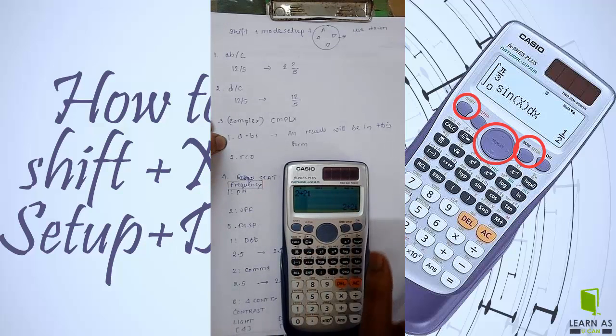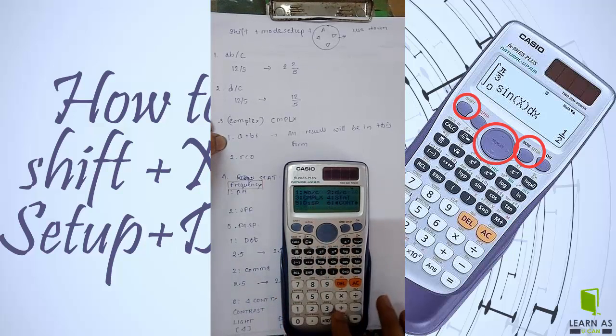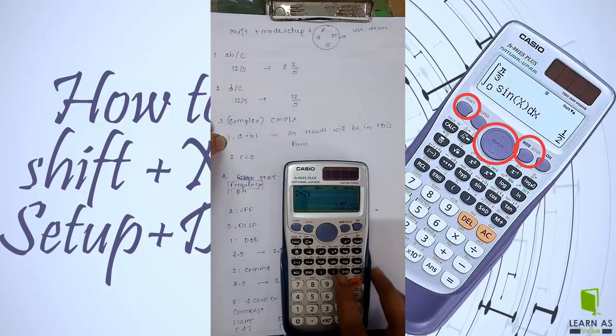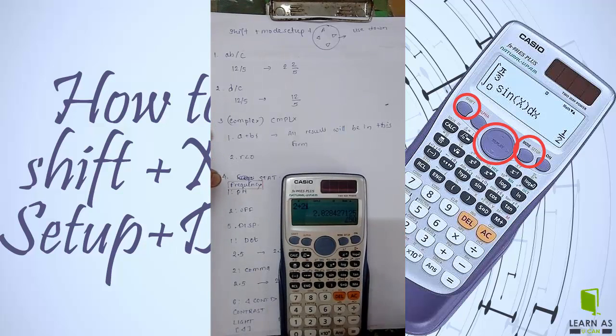If I want to change it, then go to complex and select the angular method. Then you get this result in angular form. In this way you can use this complex menu.